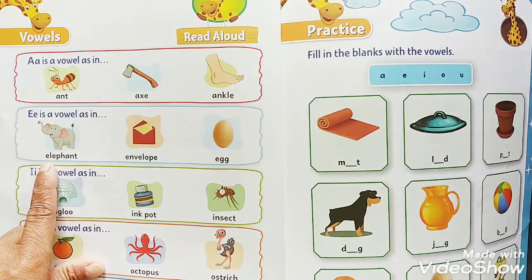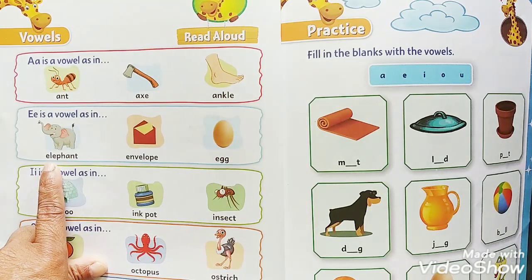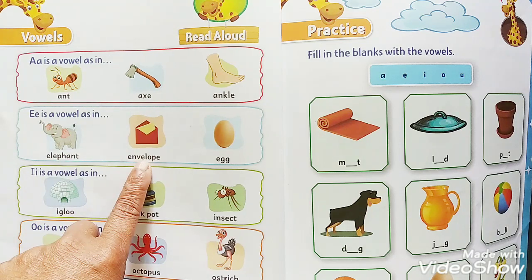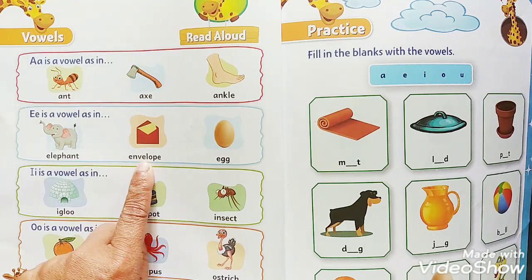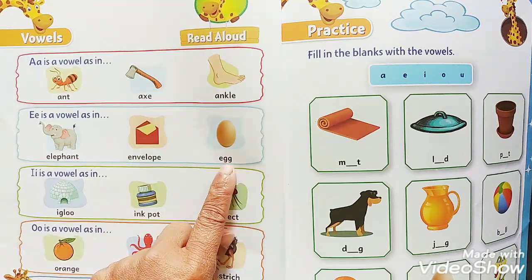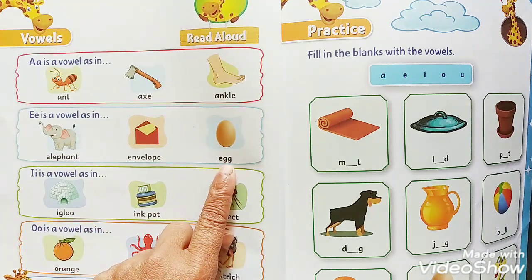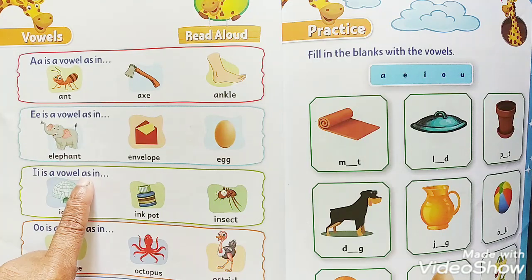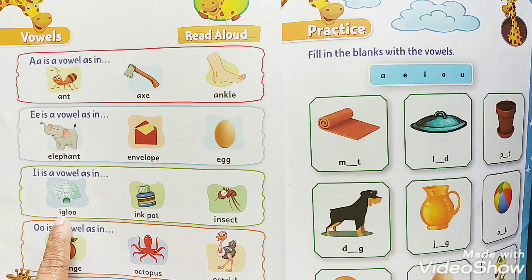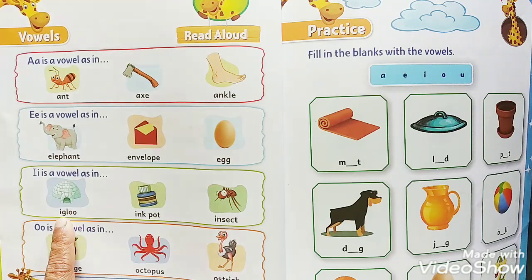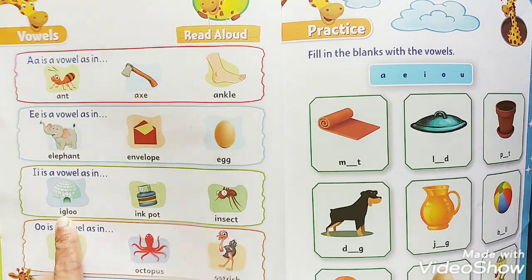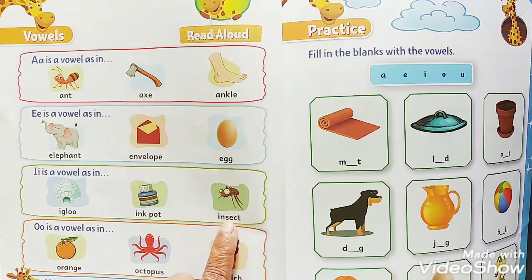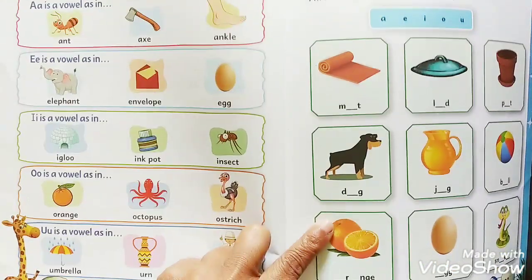E is a vowel, as in Elephant, Envelope, Egg. I is a vowel, as in Igloo, Inkpot, Insect.